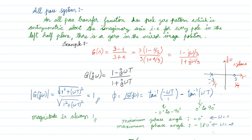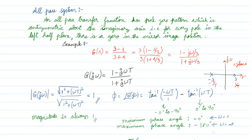I can write it in another way by taking 3 outside from the numerator and denominator. In place of s, I substitute jω to get the frequency response. Generally, with 1/3 replaced by T, the general form of an all-pass system is (1 - jωT) / (1 + jωT).